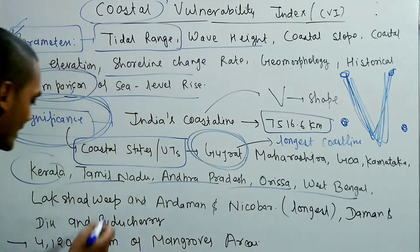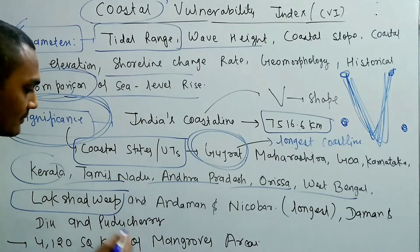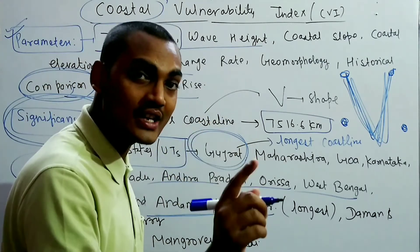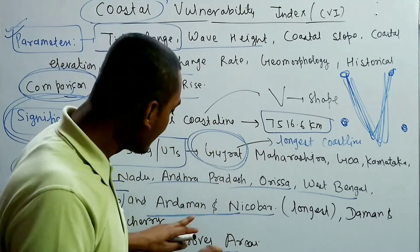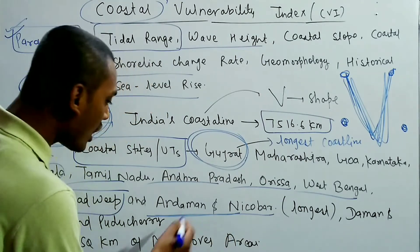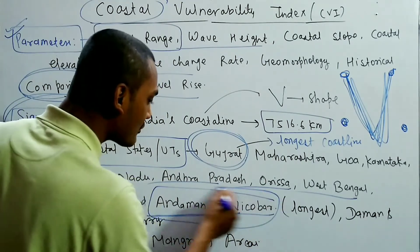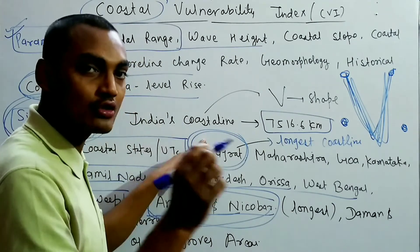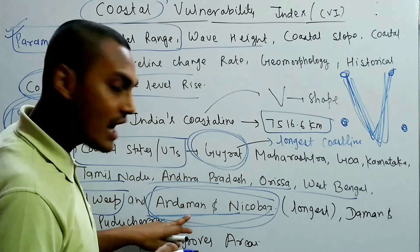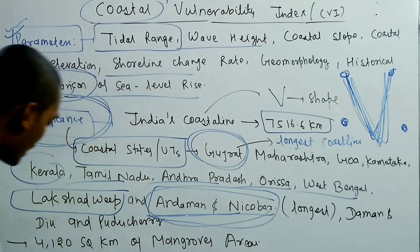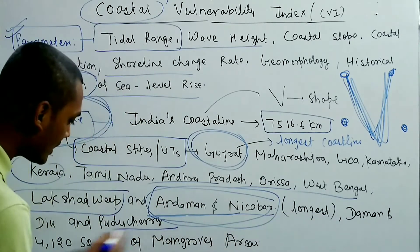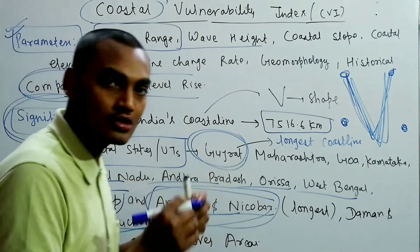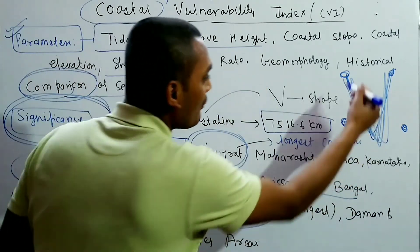Among union territories, the coastal ones are Lakshadweep, Andaman and Nicobar Islands, Daman and Diu, and Puducherry. Andaman and Nicobar is the largest union territory by coastline. However, if asked to compare, Gujarat has the highest coastline overall — not Andaman and Nicobar.